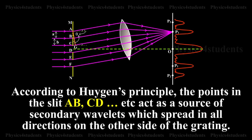Let a plane wave front of monochromatic light of wavelength lambda be incident normally on the grating. According to Huygens principle, the points in the slits A, B, C, D, etc. act as sources of secondary wavelets which spread in all directions on the other side of the grating.